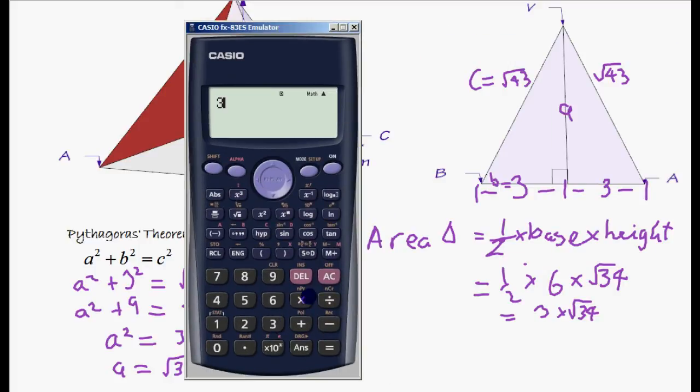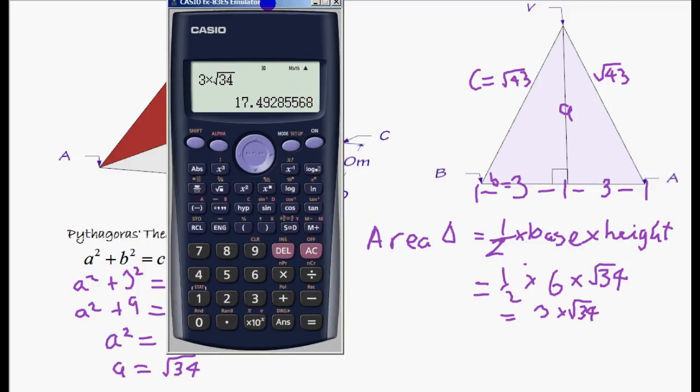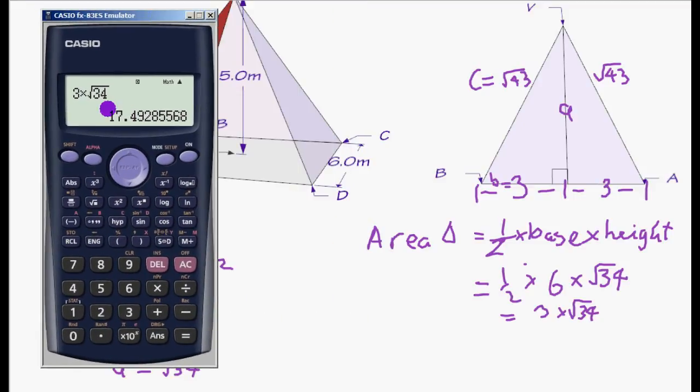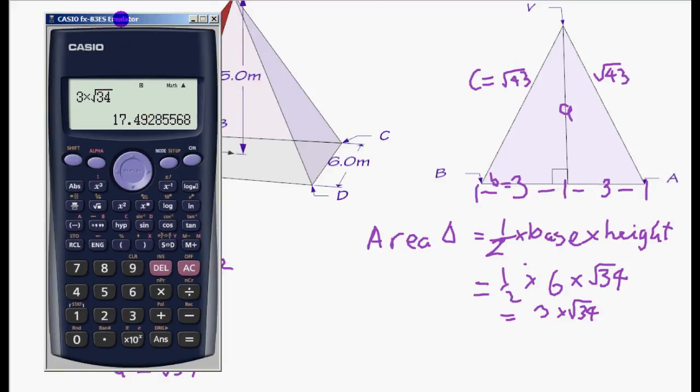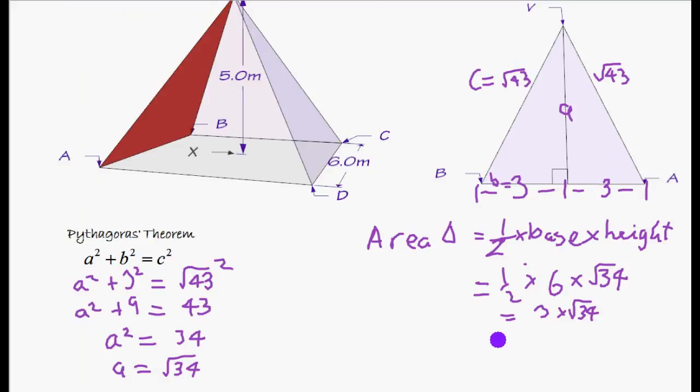So let's do that. 3 times the square root of 34 equals can't be cancelled down anymore. That's in surd format as simple as it can get. But we can see it's 17.49 in decimals. So we want to round that to 2 significant figures because the question has all been 2SF. Two significant figures gives you 7, look at the third. The third significant figure is less than 5, so we don't round up. So the answer will just be 17 to 2 significant figures.